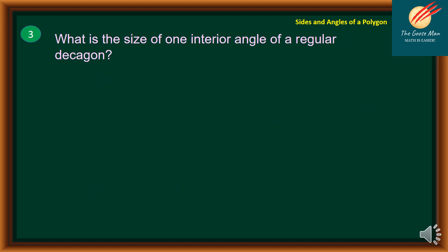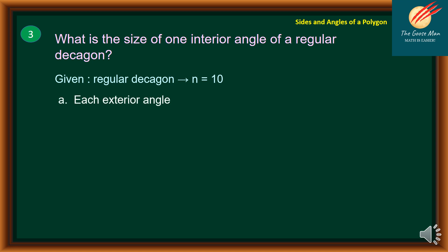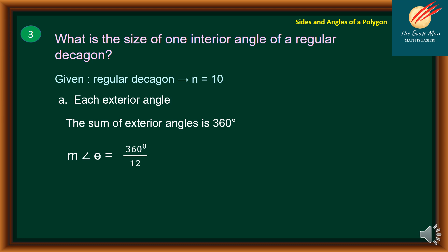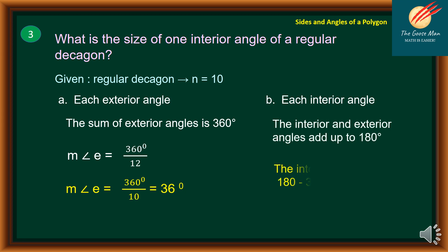Problem number 3: what is the size of one interior angle of a regular decagon? A decagon has 10 sides. The sum of exterior angles is 360, so each exterior angle equals 360 divided by 10, which is 36 degrees. Since interior and exterior angles are supplementary, the interior angle equals 180 minus 36, giving 144 degrees.